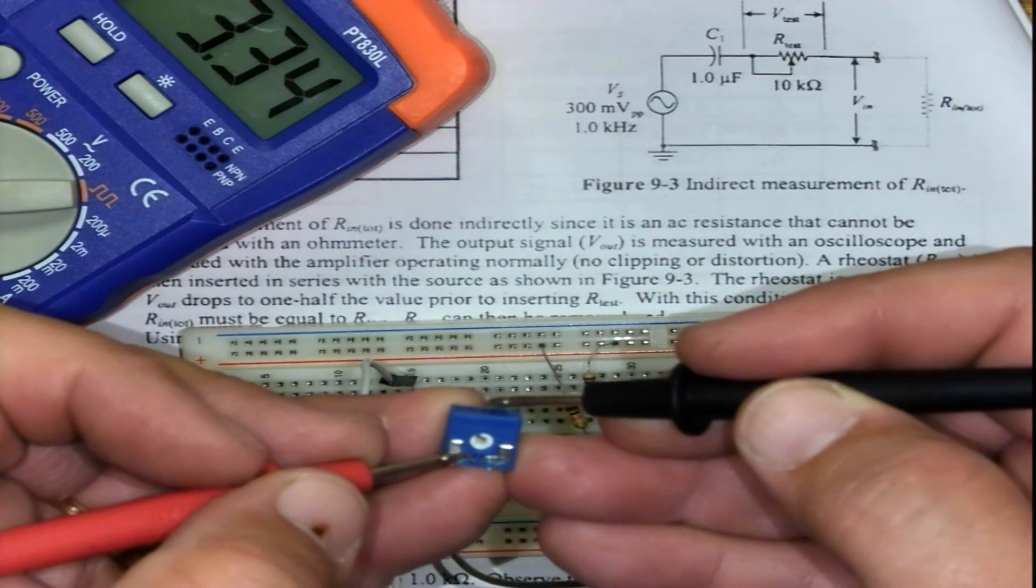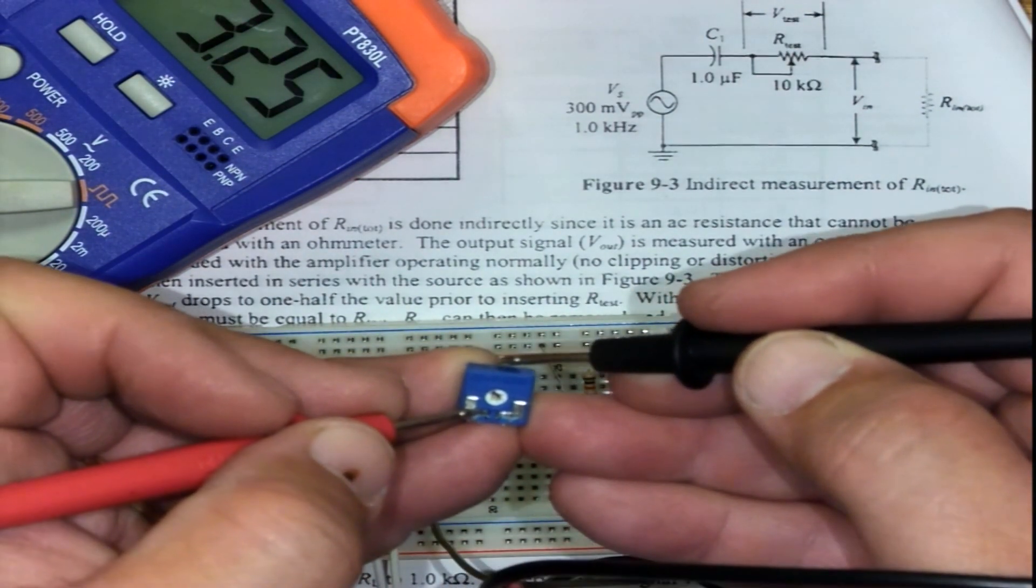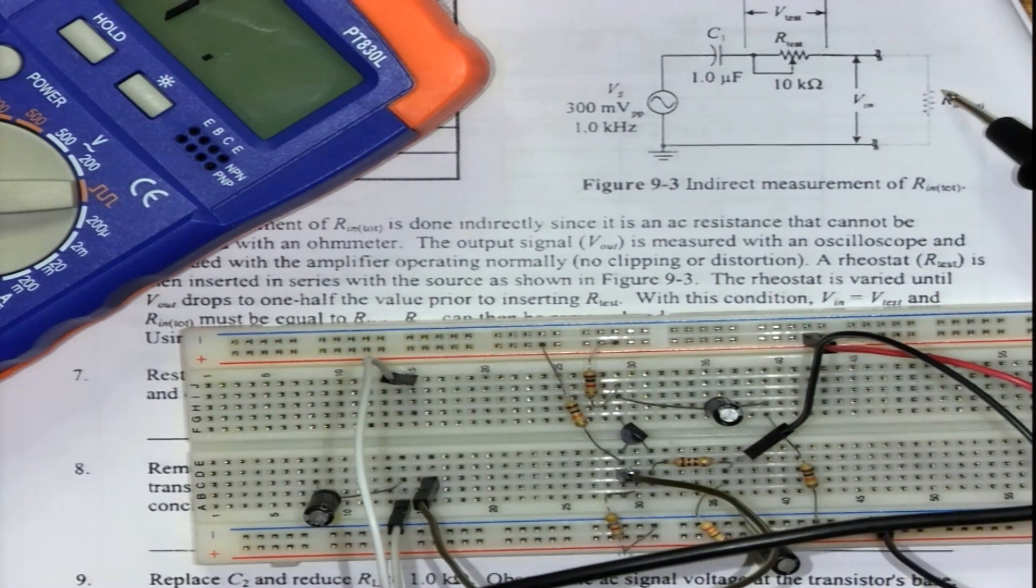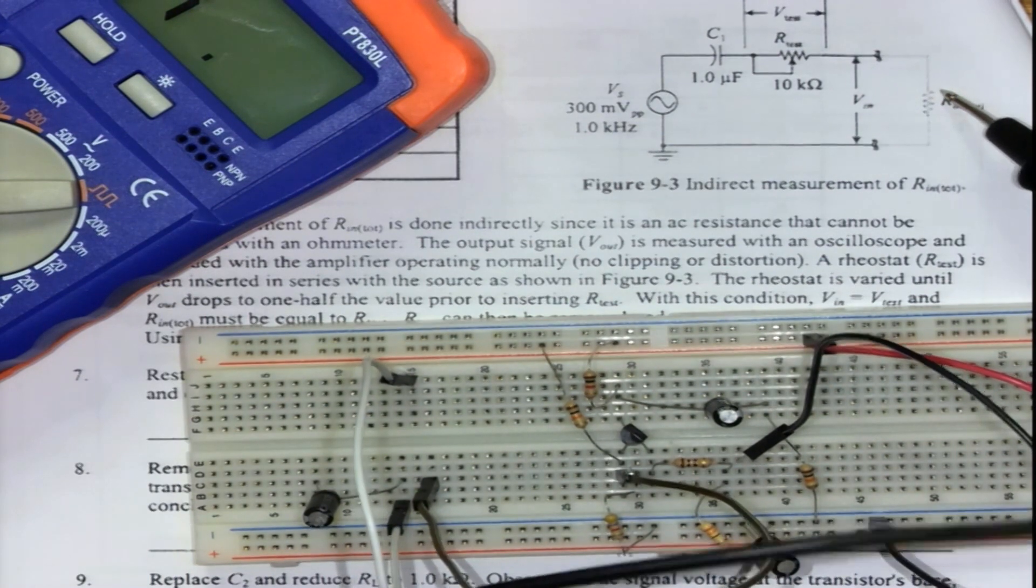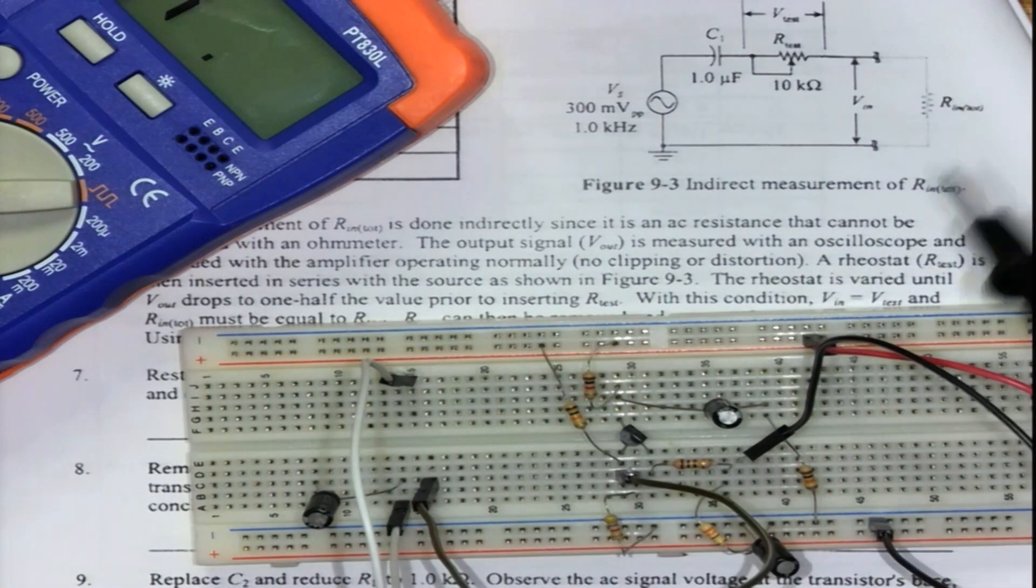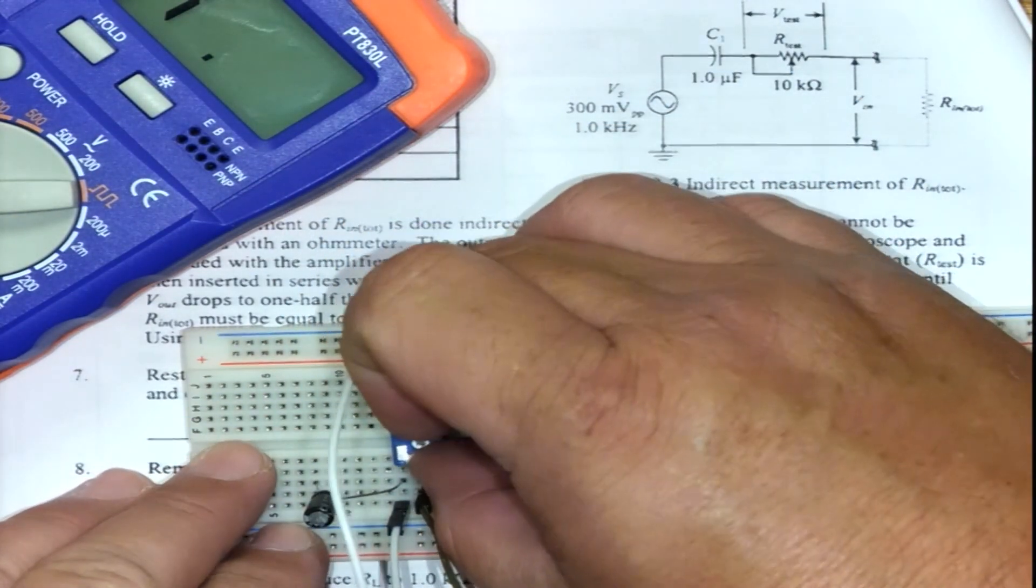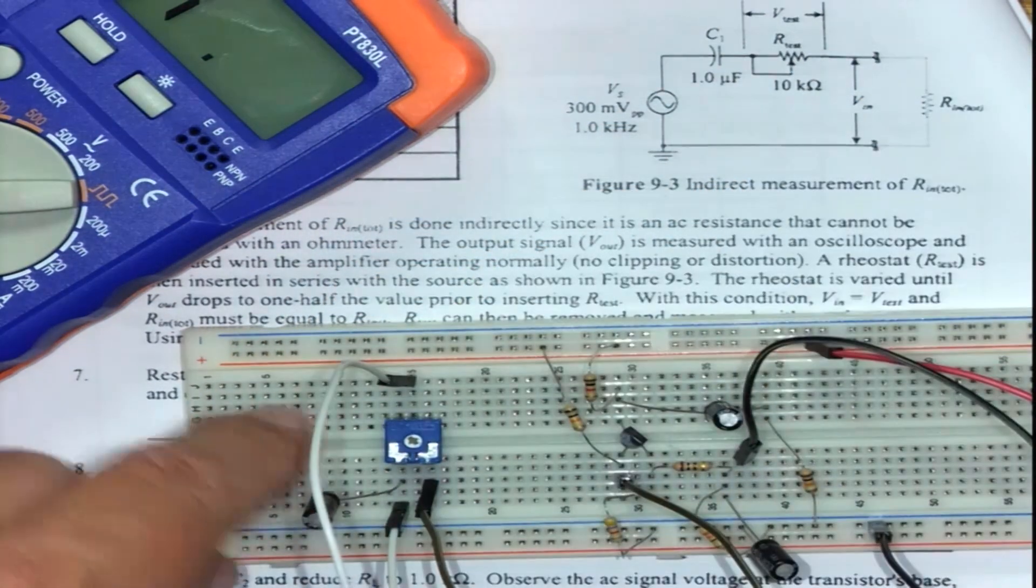That is the method. This resistance must equal the resistance internally to the amplifier, Rin total, because the two voltages are now shared equally. Well done if you can do it and come in and impress us in the lab. Thank you very much.